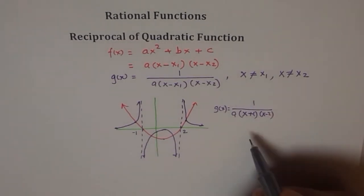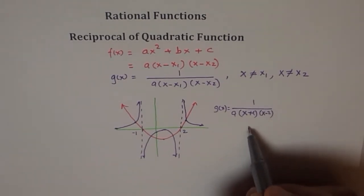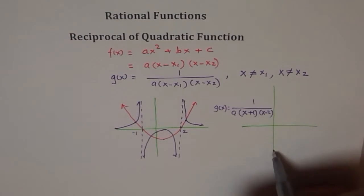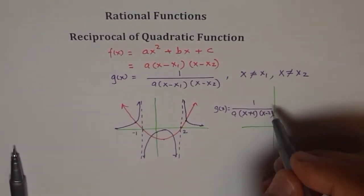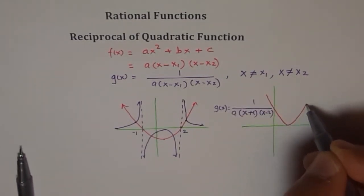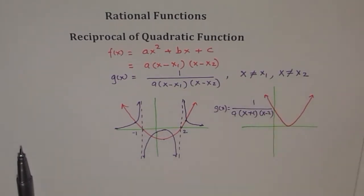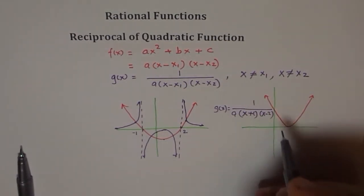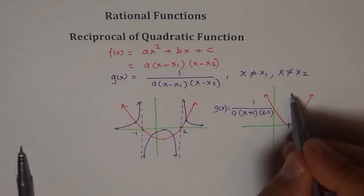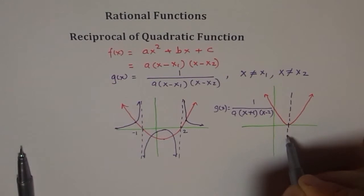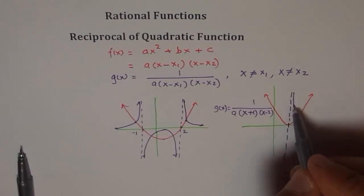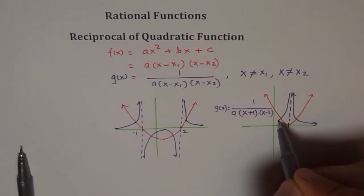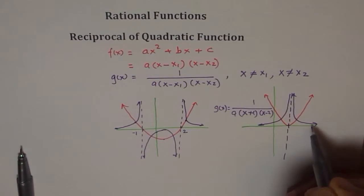Now if there is only one root, x₁ and x₂ are the same. We have a quadratic that just touches the x-axis. I have only one vertical asymptote at that x-intercept. Reciprocal of a positive is always positive. As you approach plus or minus infinity your reciprocal approaches zero, and as you approach closer to the vertical asymptote you approach infinity. So on each side of the asymptote the graph goes up to infinity.